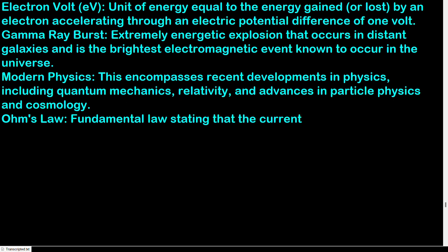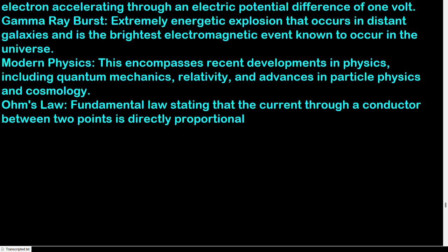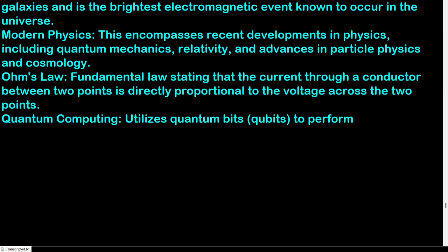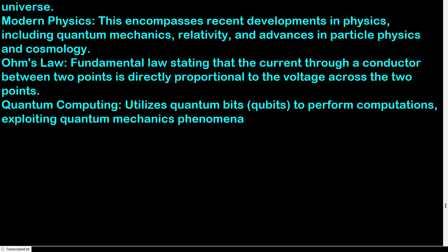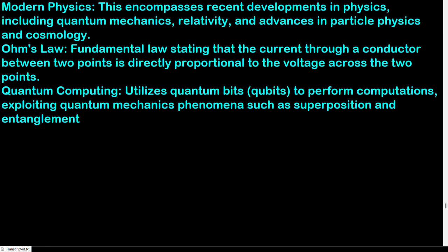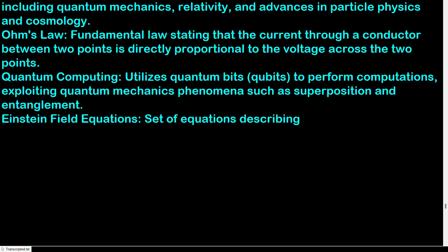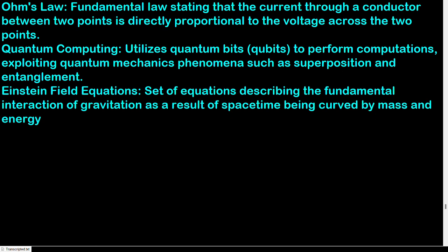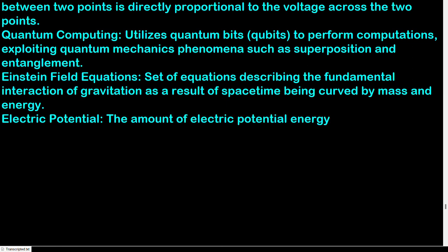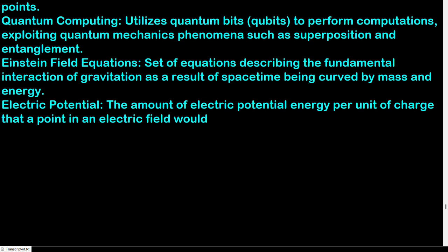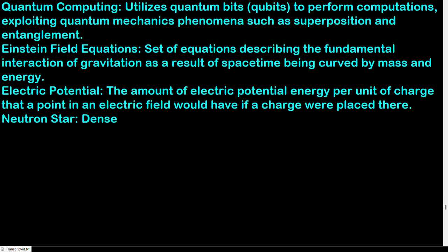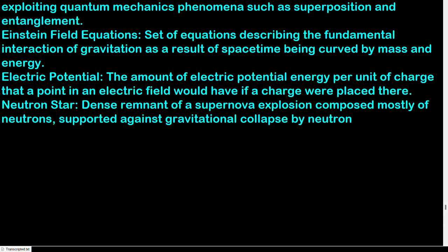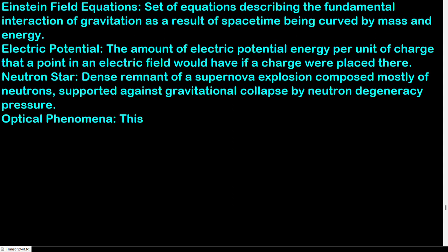Ohm's law: fundamental law stating that the current through a conductor between two points is directly proportional to the voltage across those two points. Quantum computing: utilizes quantum bits (qubits) to perform computations, exploiting quantum mechanics phenomena such as superposition and entanglement. Einstein field equations: set of equations describing the fundamental interaction of gravitation as a result of space-time being curved by mass and energy. Electric potential: the amount of electric potential energy per unit of charge that a point in an electric field would have if a charge were placed there. Neutron star: dense remnant of a supernova explosion composed mostly of neutrons, supported against gravitational collapse by neutron degeneracy pressure.